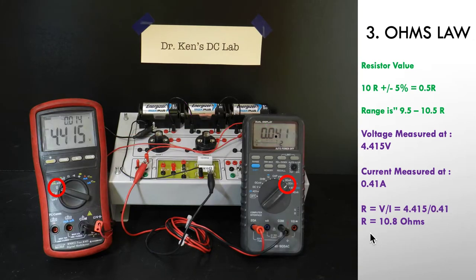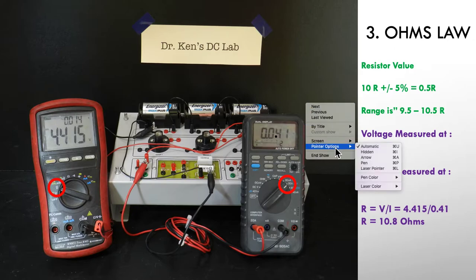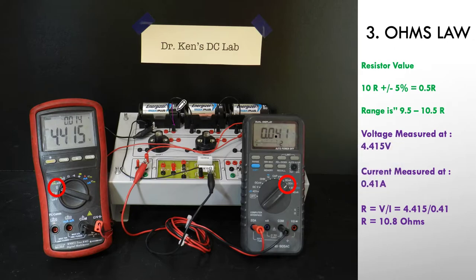Finally, you can see we've added 3 batteries now in series. We're now drawing almost 4.5 volts, 4.415 volts. The current has gone up to 0.41 of an amp. And again we do the calculation and we get 10.8 ohms again. Obviously the resistor hasn't changed, but as the voltage has gone up, the current has gone up in relationship to it. That's the way the physics works and that's the purpose of this demonstration.